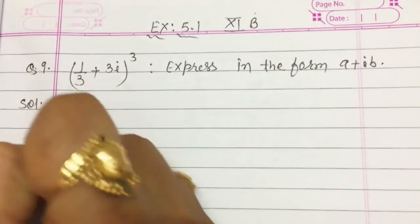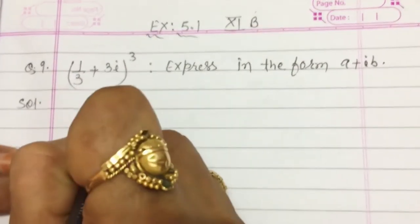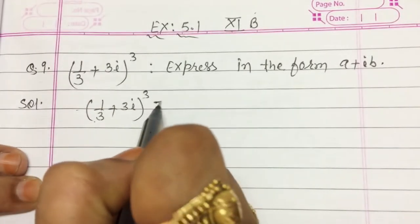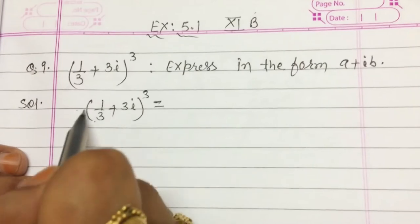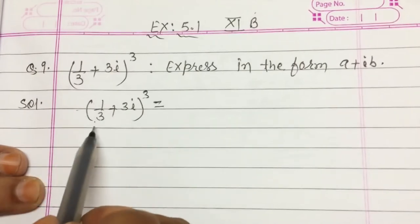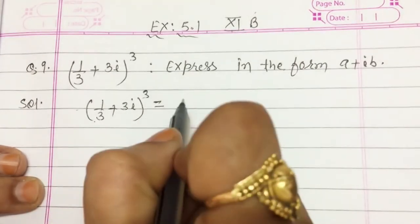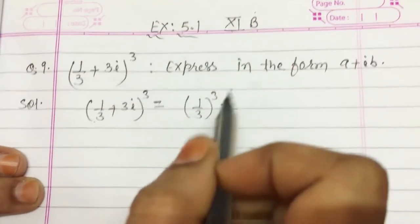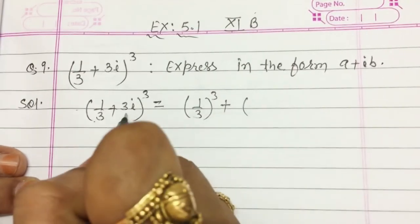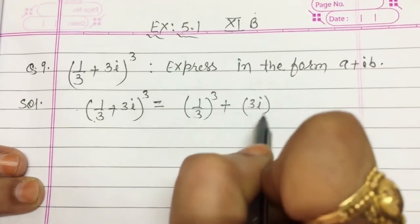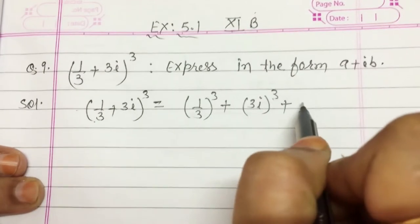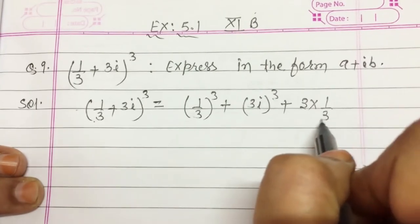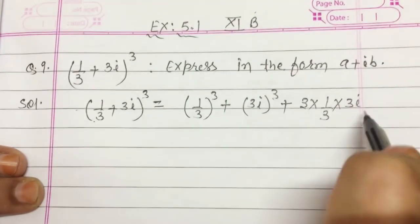For this question, simply apply the formula of (a + b) whole cube. Here in place of a it is 1/3 — so write 1/3 cube — then plus b cube, it is (3i) cube. Then 3ab: here a is 1/3 and b is 3i.